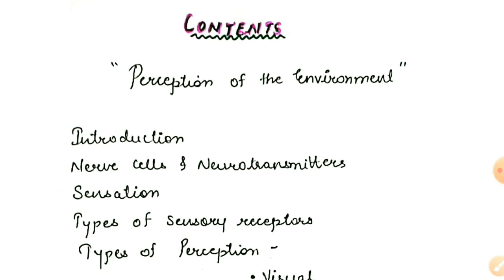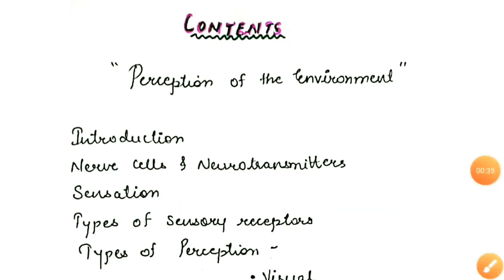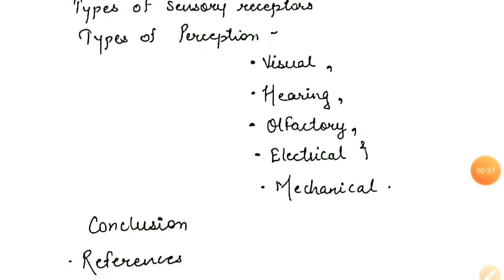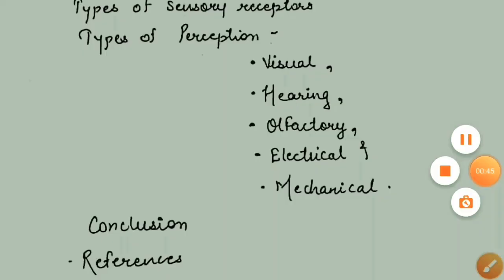Let's get started in the English language. Here are the contents: first is introduction, then nerve cells and neurotransmitters, then sensation, types of sensory receptors, types of perceptions — which are visual perception, hearing, olfactory, electrical, and mechanical — then conclusion and references.